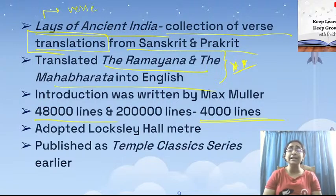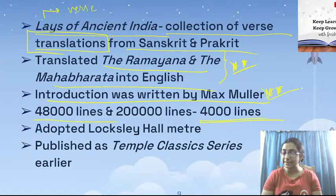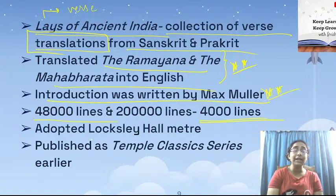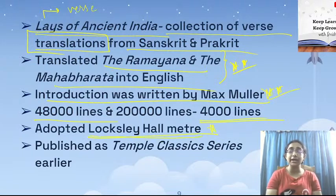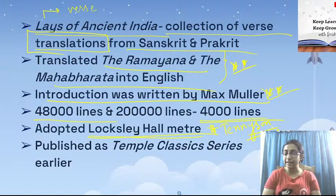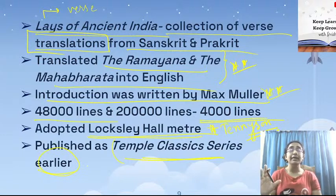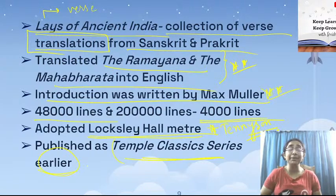In this particular translation, the introduction was written by Max Muller. He adopted the Locksley Hall meter — Locksley Hall is a specific poem by Tennyson with a particular meter. Ramesh Chandra Dutt adopted this Locksley Hall meter in his translation of the Ramayana and Mahabharata. The translations were published as the Temple Classics series — both epics in a single collection.